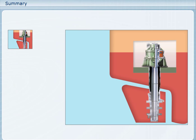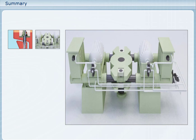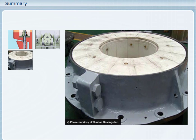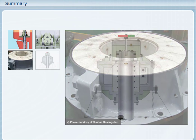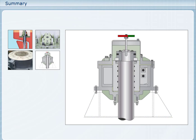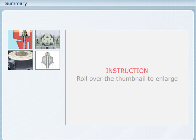For rotary vane type steering gears, the actuator is usually connected to the rudder stock, while for ram types, the rudder stock is connected to the tiller. The typical layout of a ram type steering gear uses a separate rudder carrier bearing, whereas the rotary vane steering gear usually has integral rudder carrier and radial bearings.